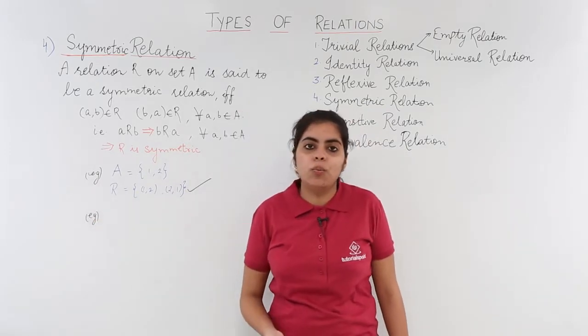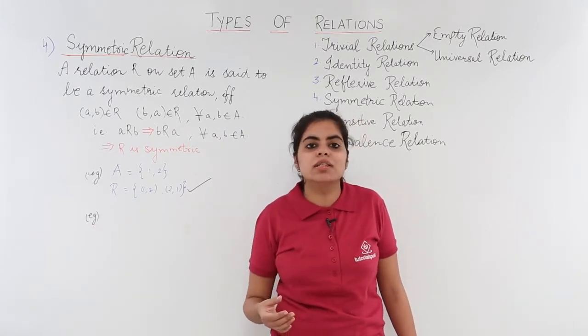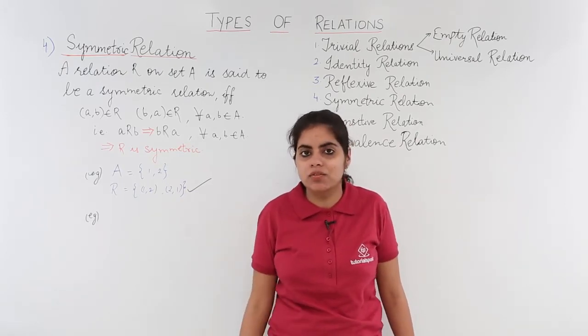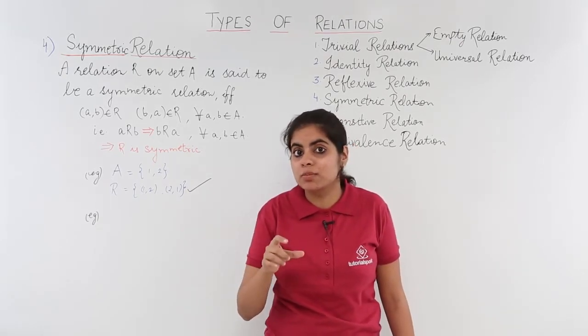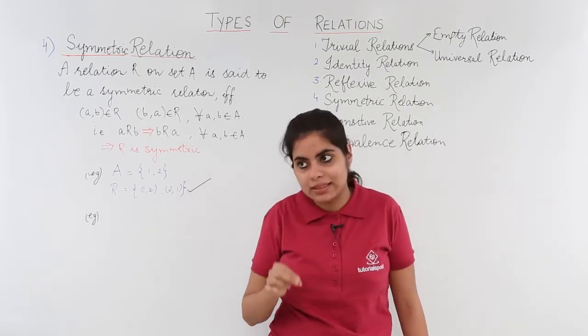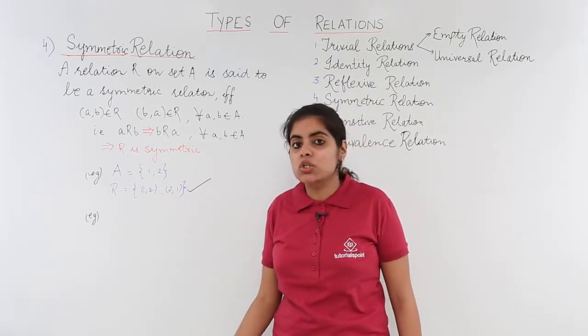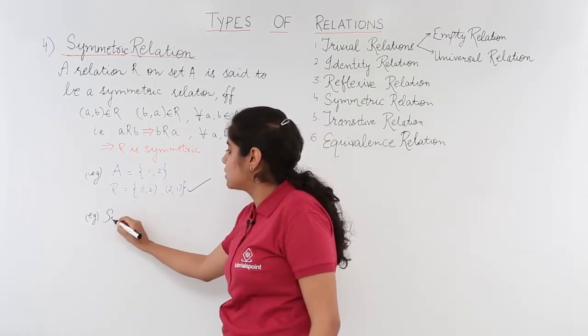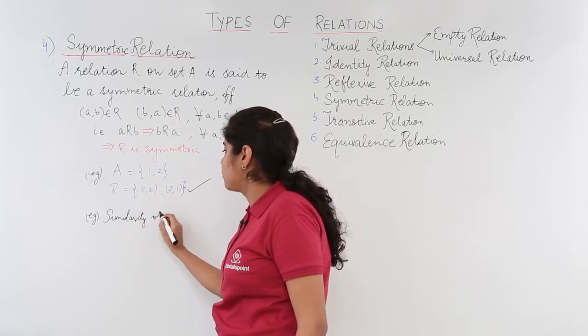We all know what similarity of triangles means. Similar triangles are the ones with certain conditions same, that is suppose two triangles are given, they might not be same in shape or size. Congruency and similarity, don't get confused. Similarity definitely means one thing that the size may or may not be same but the shape is same. So for that I say an example: similarity of triangles.